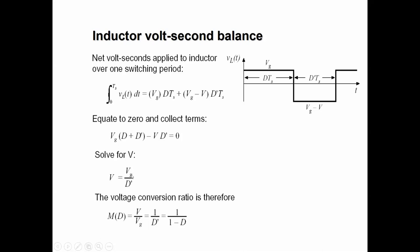If we put d = 0, the output voltage equals the input voltage Vg. If we put d = 1, then 1 − d = 0 and the output voltage approaches infinity. So this converter can produce an output voltage ranging from the input voltage upward to very large values depending on the duty cycle d — which is why it is called a boost converter, as it steps up the DC voltage.